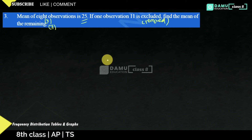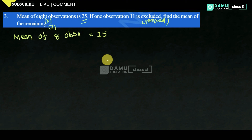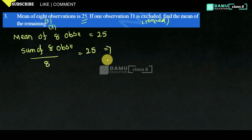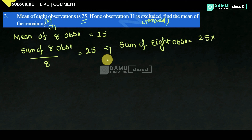What is given: mean of 8 observations equals 25. That means sum of 8 observations divided by number of observations, which is 8, equals 25. This implies sum of 8 observations equals 25 multiplied by 8. So 8 times 5 is 40, 8 times 2 is 16, carry 20 — sum of 8 observations is 200.